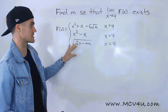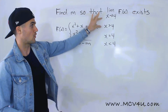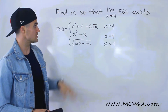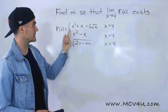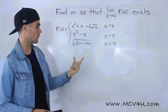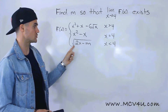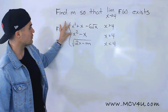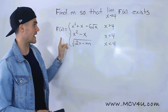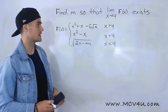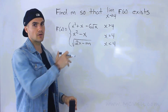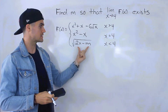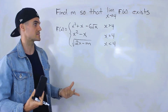It has three separate pieces — three separate functions: for x values greater than 4, when x is equal to 4, and when x is less than 4. The function that contains the constant m we're solving for is this third function, the square root of 2x minus m. I'm going to work with the first two functions first — the ones without m — to figure out some y values and see what's going on around x equals 4. Then we can deal with the third function and see how it fits.